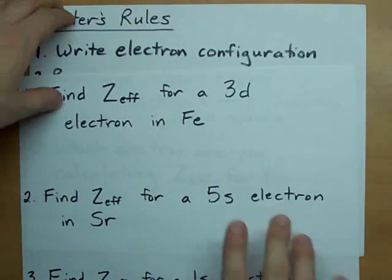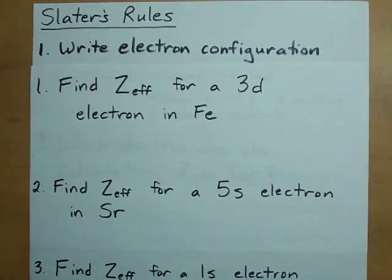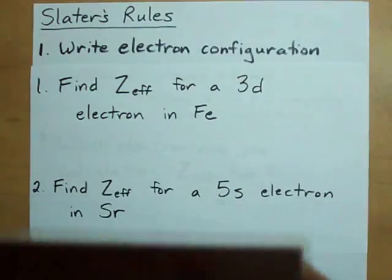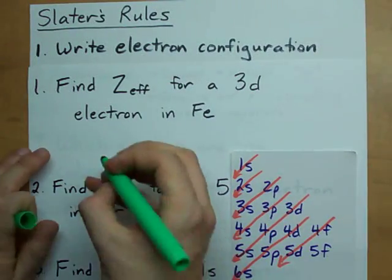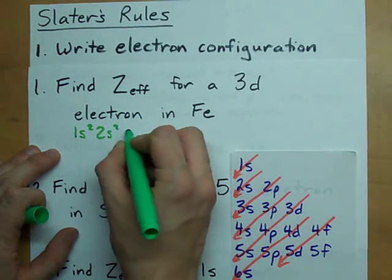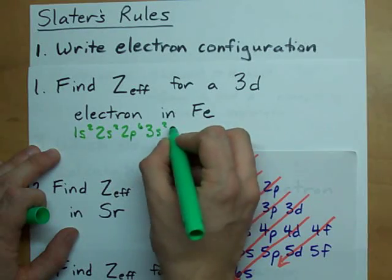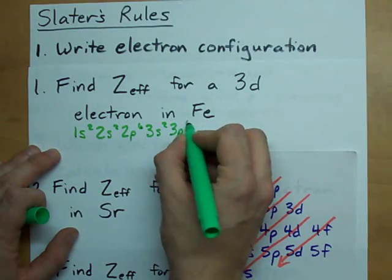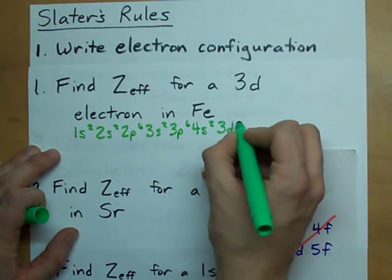So how do you find the effective nuclear charge with Slater's rules? Step one, write the electron configuration for the atom itself. I'm going to do that right now for iron. According to the periodic table here, iron is element number 26. So according to my order of filling, that means it's 1s2, 2s2, 2p6, 3s2, 3p6, 4s2, 3d6.